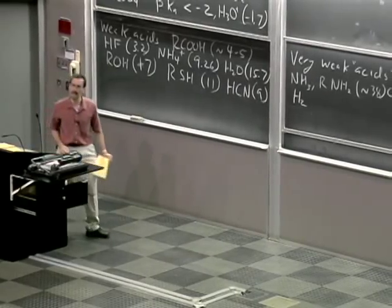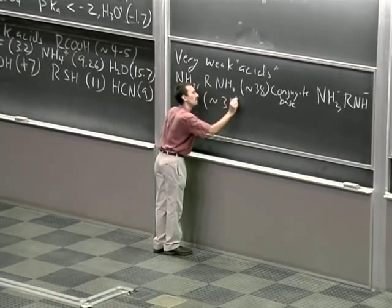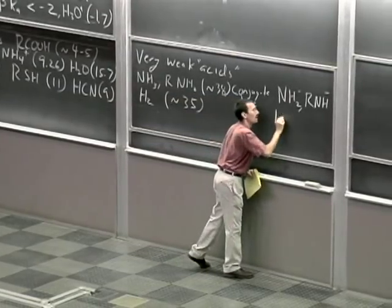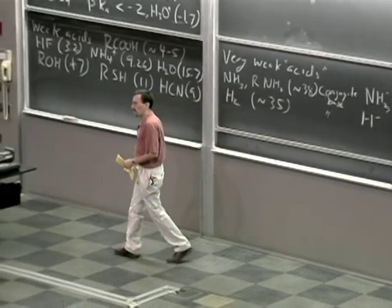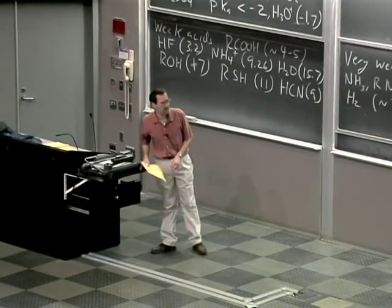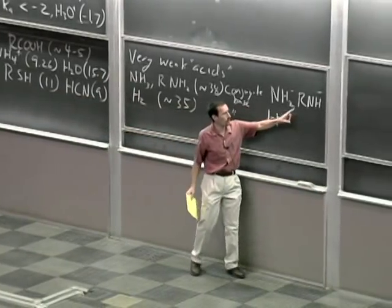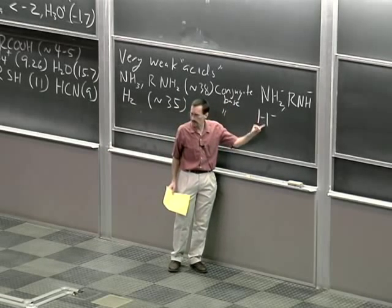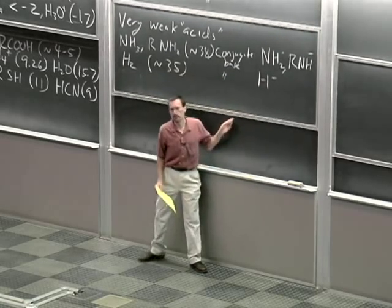Hydrogen — not something you would think of as an acid — has a pKa of about 35. The conjugate base is hydride anion. In the A, B, and C course sequence, you will see bases where amide anion, R2N−, or R2NLi is used as a base. You'll also see cases where sodium hydride or potassium hydride is used as a base.